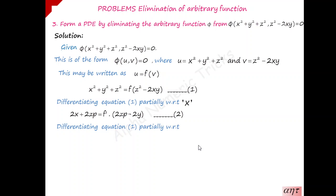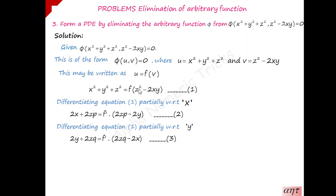Now differentiate equation 1 partially with respect to the other independent variable y. Differentiation of x squared with respect to y becomes 0 because x is constant, plus differentiation of y squared with respect to y is 2y, plus differentiation of z squared with respect to y is 2z into dou z by dou y, taken as q. Equal to f dash into: differentiation of z squared with respect to y is 2z into dou z by dou y taken as q, minus 2x into differentiation of y with respect to y becomes 1. Number that equation as 3.